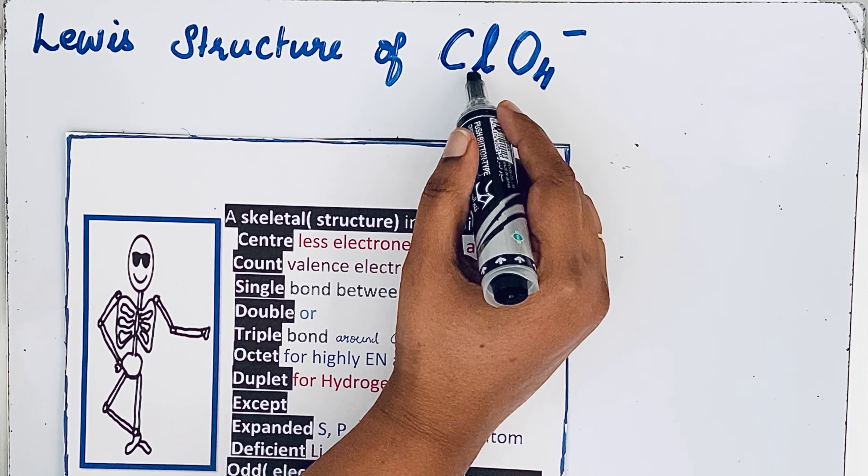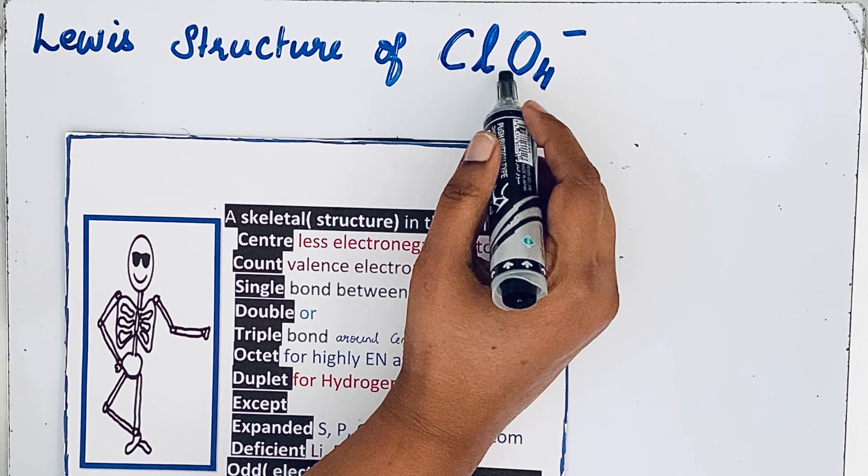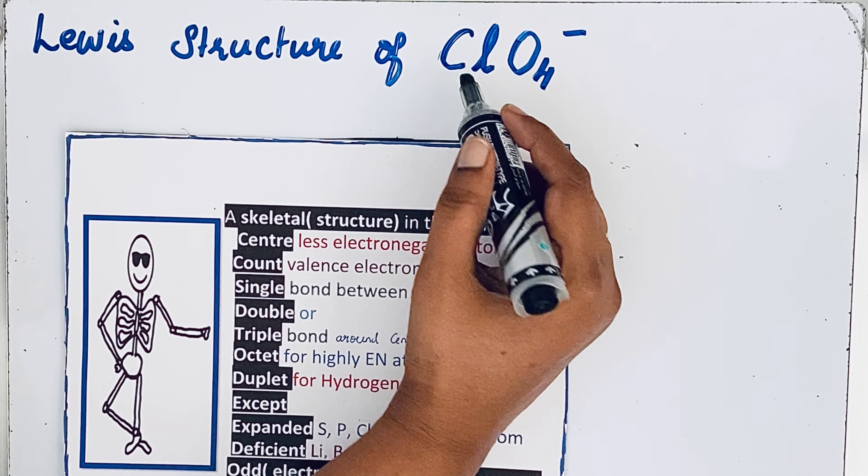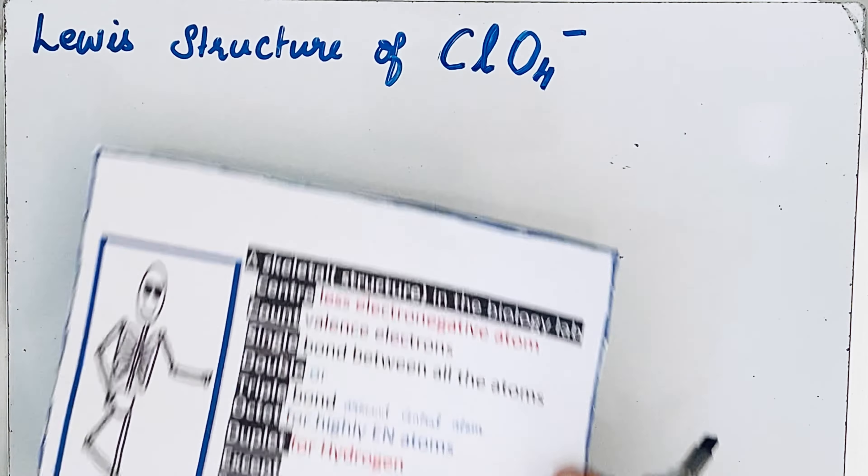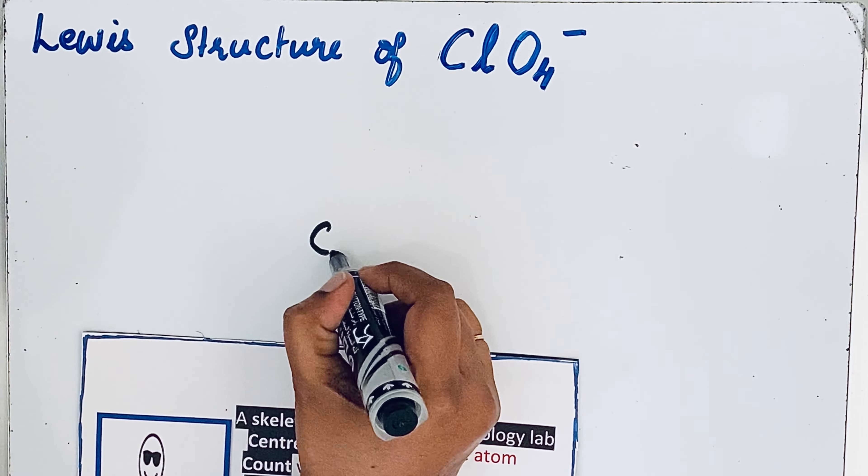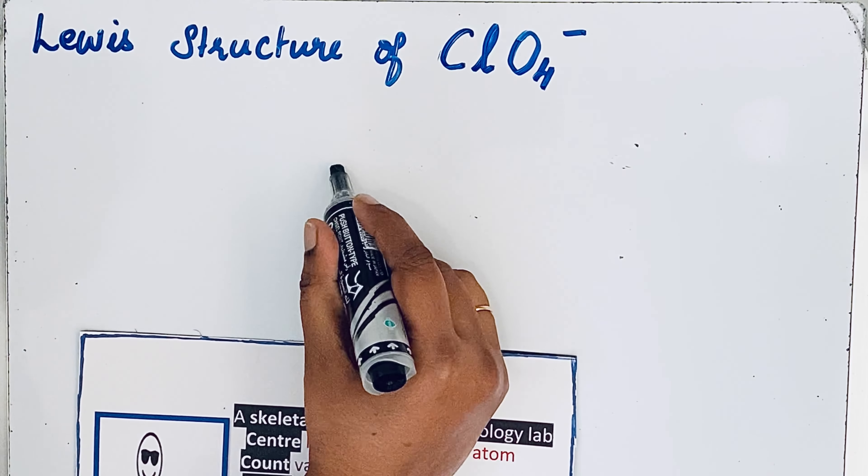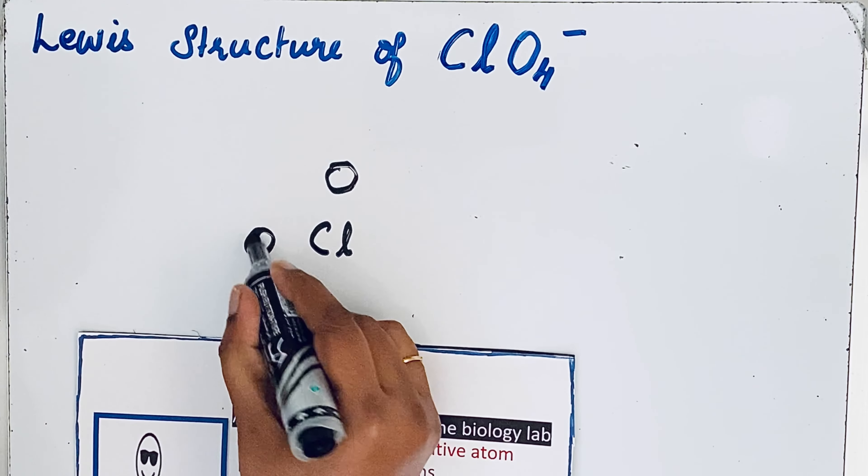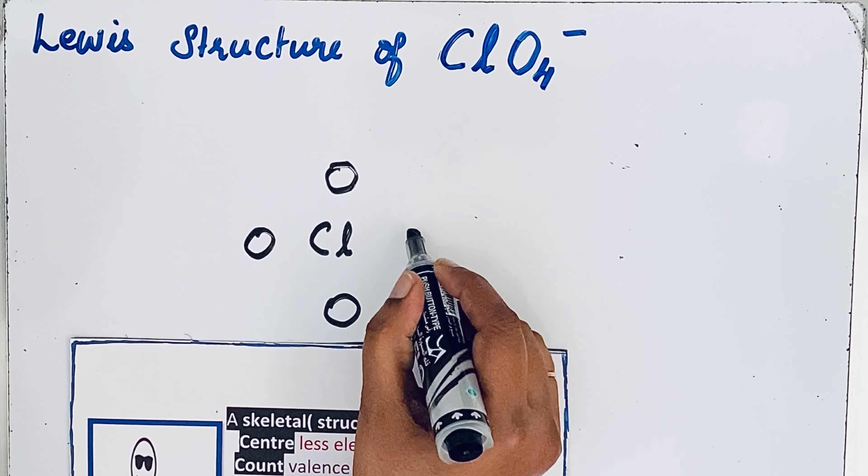Here we have chlorine and oxygen. When compared to oxygen, chlorine is less electronegative. So we're going to draw chlorine in the center with oxygen around it. So chlorine and four oxygen atoms: one, two, three, and four.